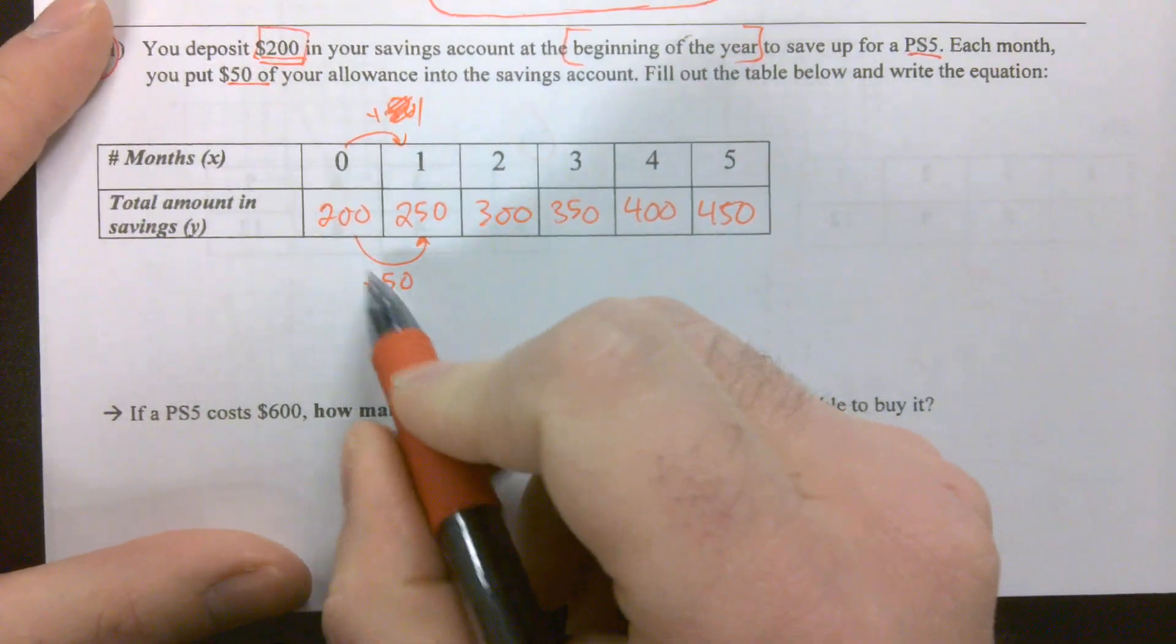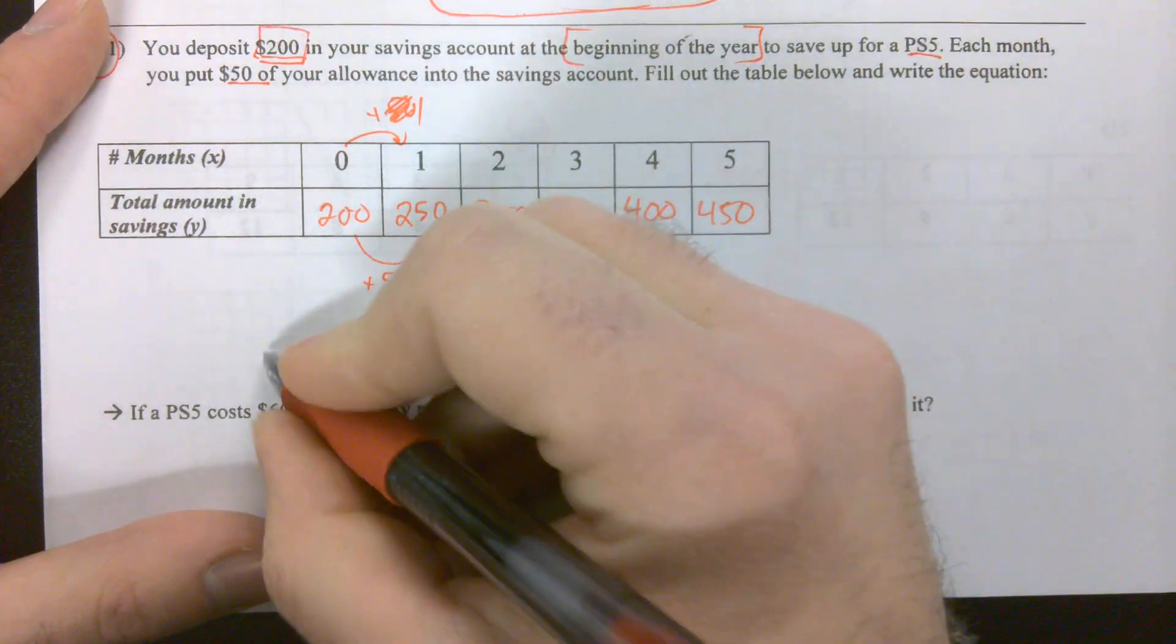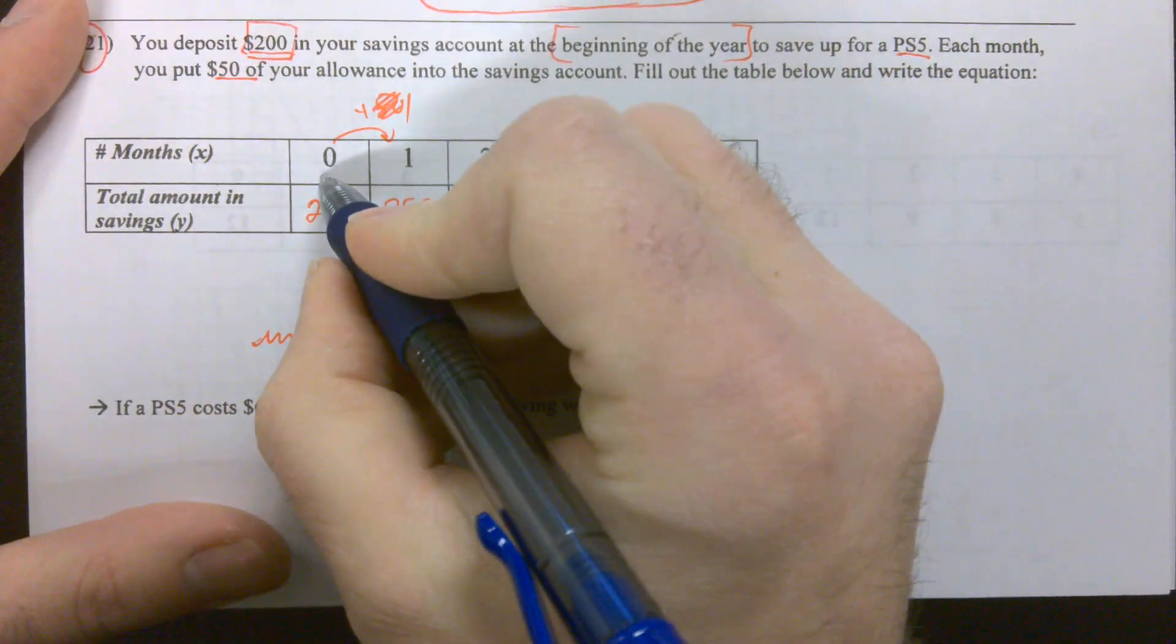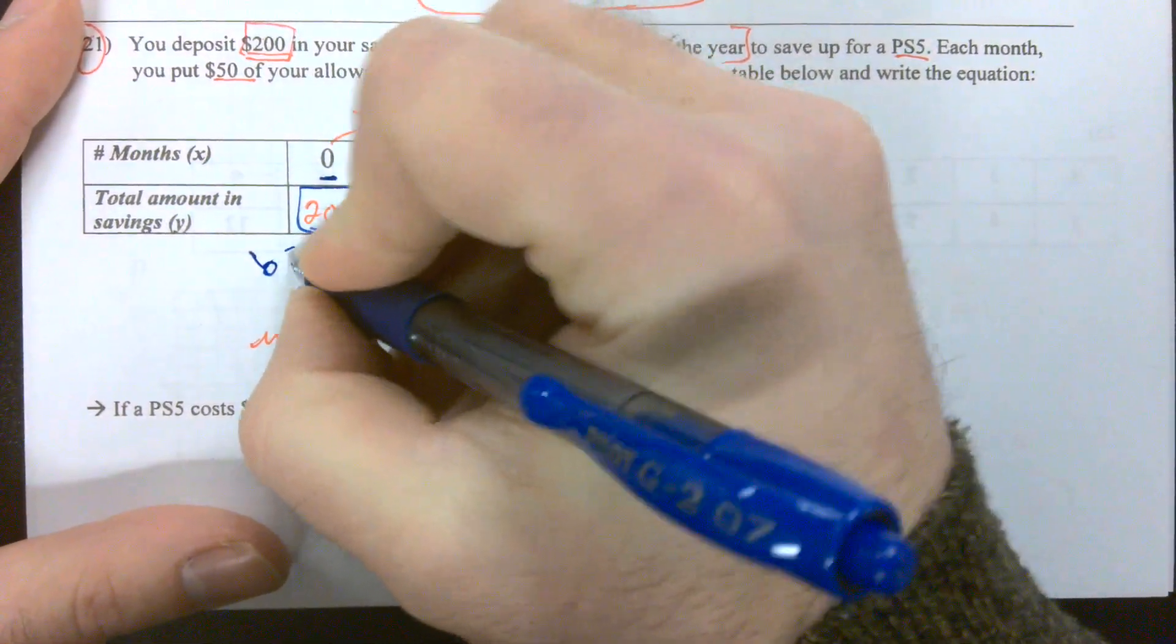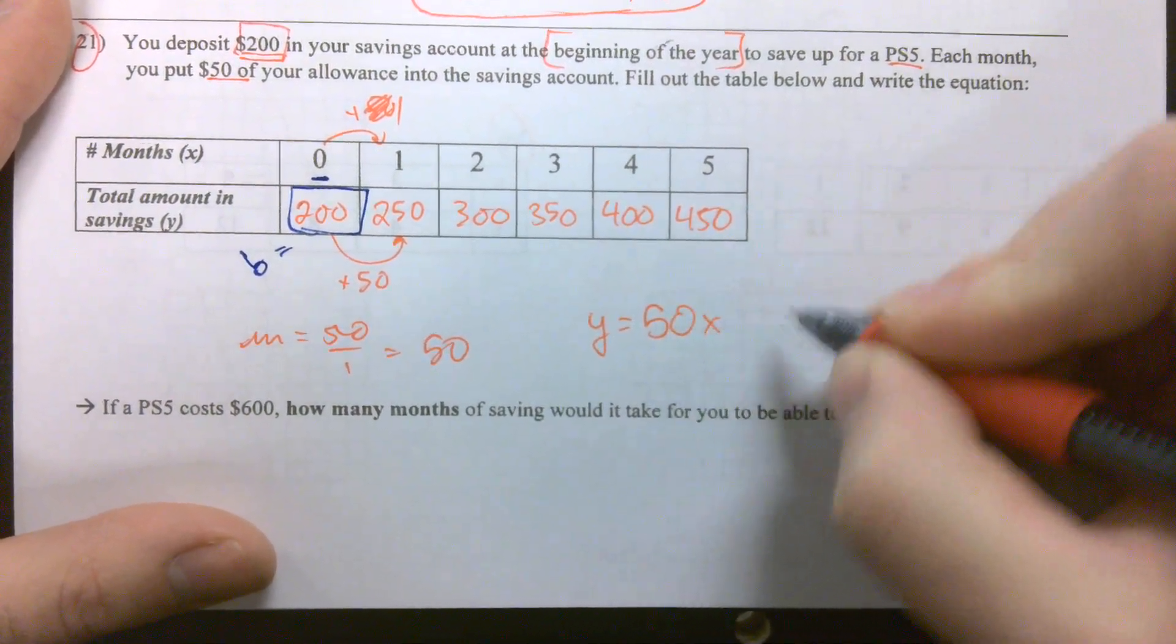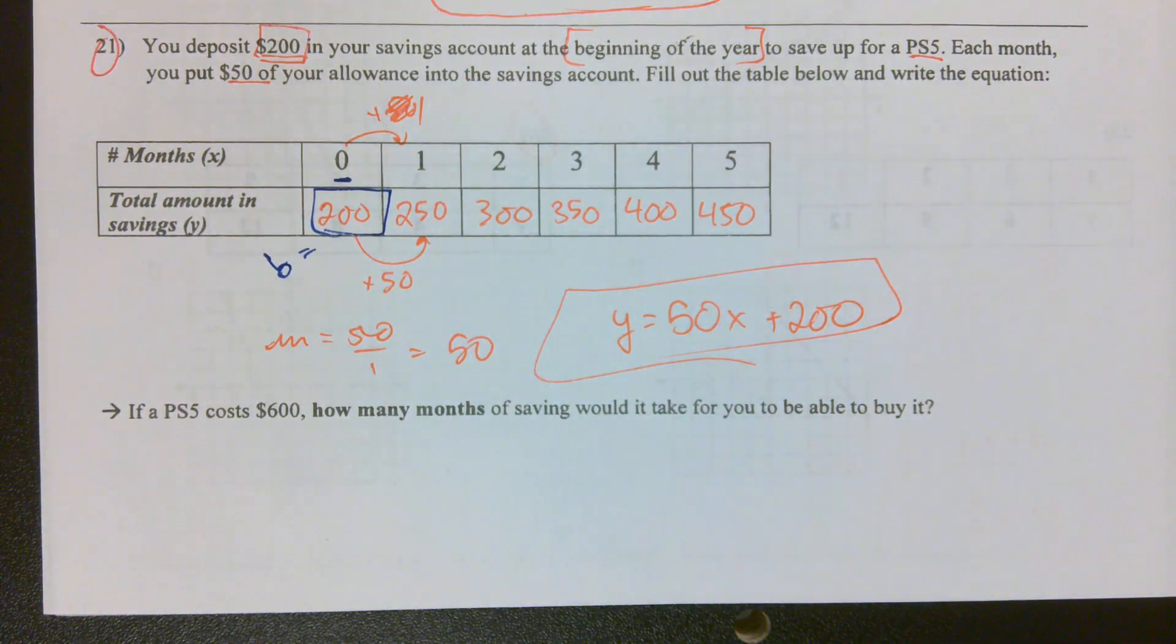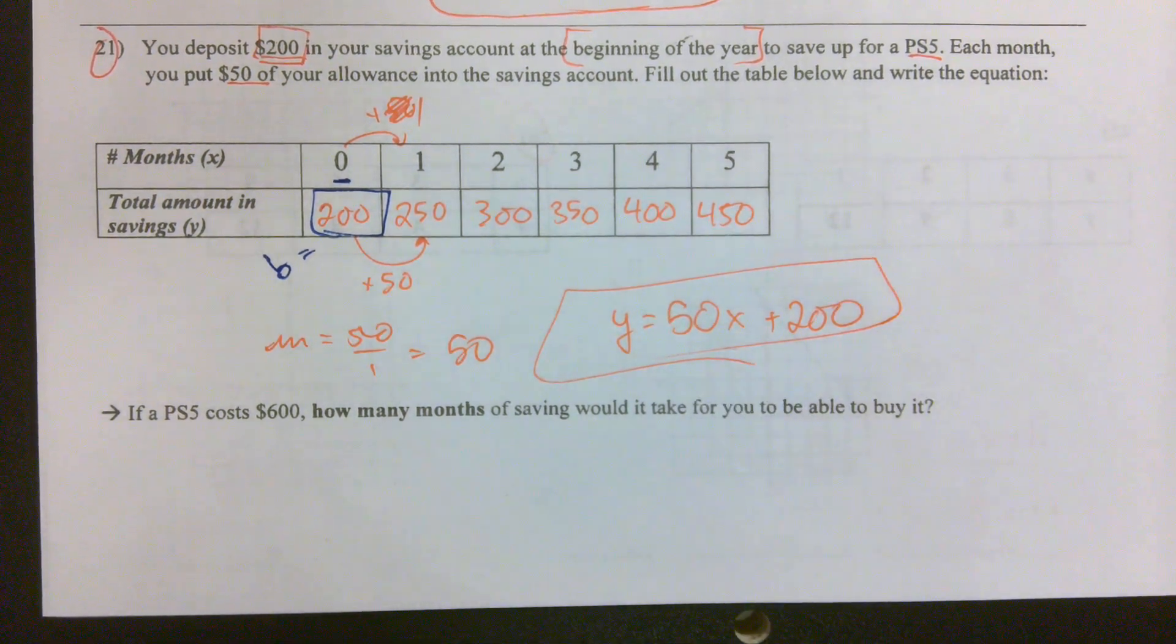My slope is the change in Y, 50, over the change in X, which is 1. That gives me 50. And wherever there's an X value of zero, my B value is right under it. B is equal to 200. We can write the equation Y is equal to 50X plus 200. This equation is a function for how much we're saving Y in terms of how many months we've been saving X.